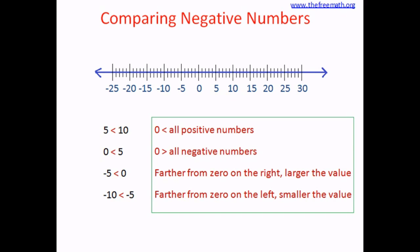Now let's use what we've learned to compare some numbers. The first pair is 0 and negative 9. Zero is greater than negative 9 — we know that 0 is greater than all negative numbers. The next pair is negative 9 and negative 3. Negative 9 is on the left-hand side of negative 3; negative 9 means 9 less than 0 and negative 3 means 3 less than 0, so negative 9 is smaller than negative 3.